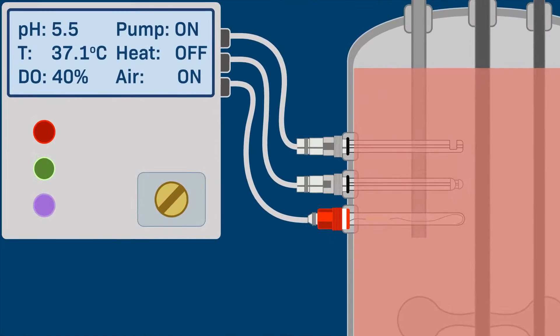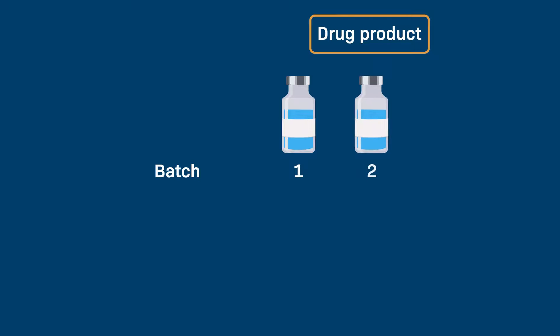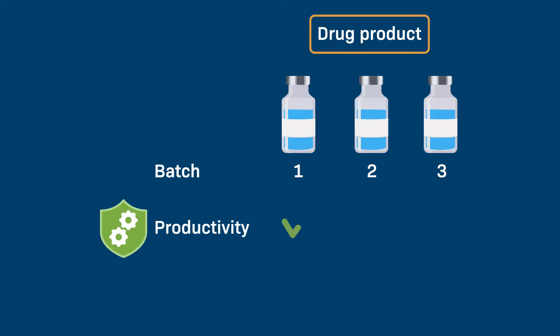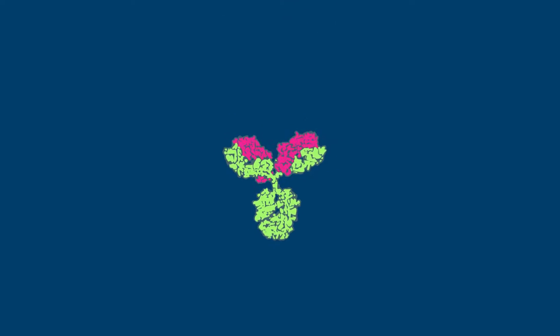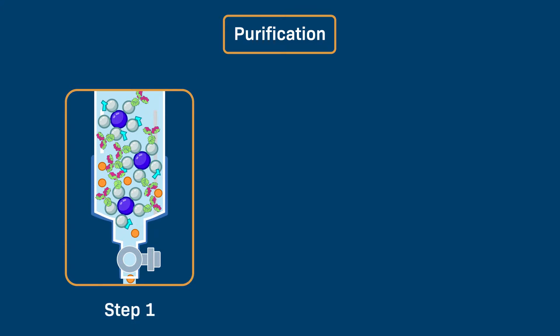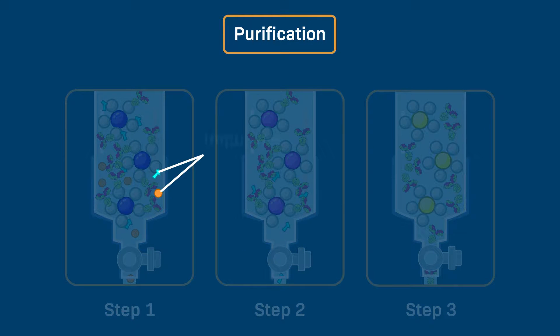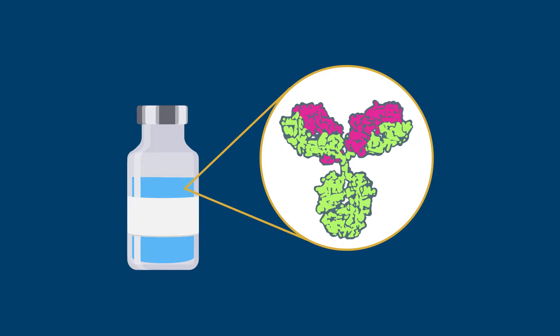These process controls are important to maintain the same conditions each time we make a batch of the biologic. This ensures that we yield consistent results in terms of productivity and drug product quality. Lastly, we will learn how the biologic is obtained in its purest form through a process known as purification. Purification is a multi-step process that aims to remove different types of impurities at each step. At the end of this process, the drug substance is ready to be made in a desired dosage form.